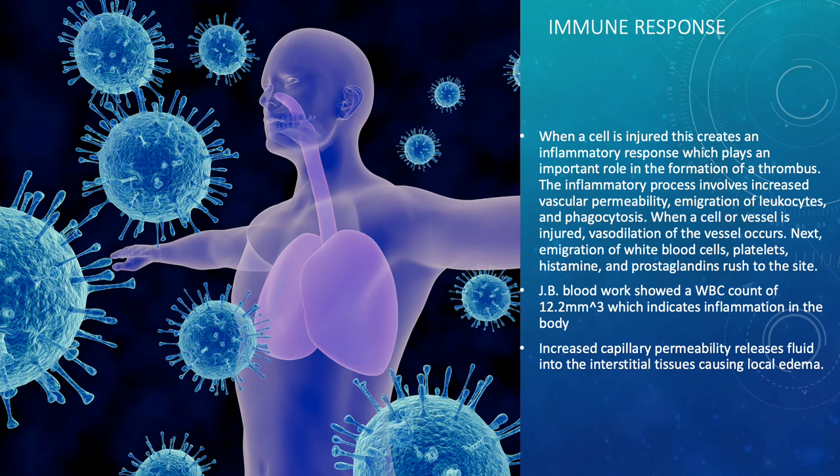Regarding the immune response, when a cell is injured, it creates an inflammatory response that plays a role in thrombus formation. The inflammatory process involves increased vascular permeability, emigration of leukocytes, and phagocytosis. When a cell or vessel is injured, vasodilation of the vessel occurs, followed by emigration of white blood cells, platelets, histamine, and prostaglandins rushing to the site.